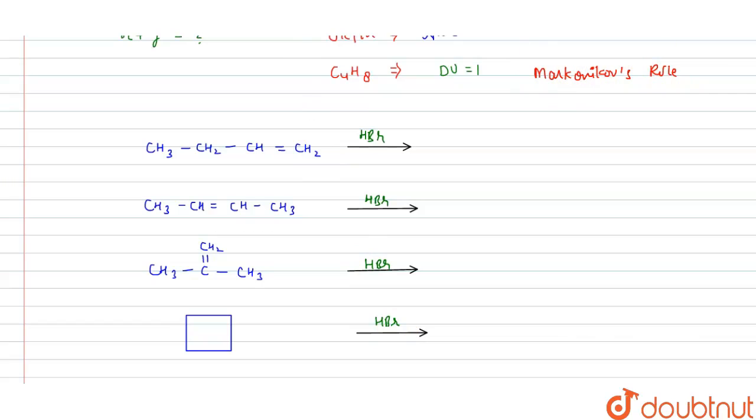What says Markovnikov's rule? The Markovnikov's rule says where the positive part is attached on that carbon where the number of hydrogen is maximum.